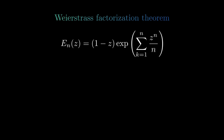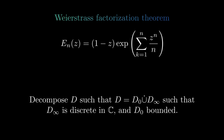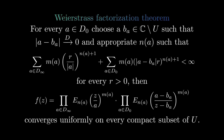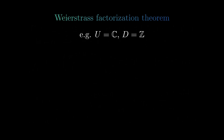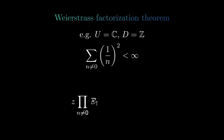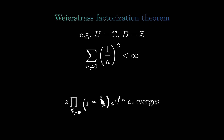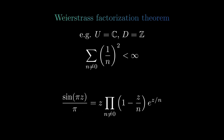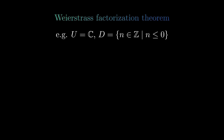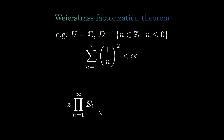Let's now look at the Weierstrass Factorization Theorem. Here we must introduce extra factors in the product to ensure convergence, which takes a specific form. Decomposing the discrete set and imposing certain conditions, we get a convergent product giving us our holomorphic function with prescribed zeros. We can use this to find a holomorphic function on the complex plane with zeros at every integer — the resulting product is related to the sine function. We can also find a function with zeros exactly at the negative integers, which turns out to be related to the gamma function.